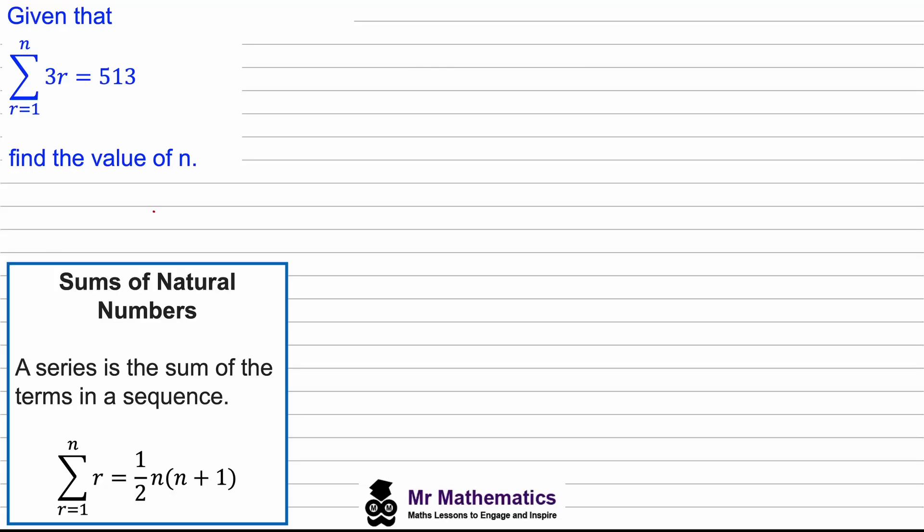This is the fourth video in my series on the sums of natural numbers. In this example we're given that the summation between r equals one to n of 3r is equal to 513.